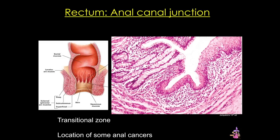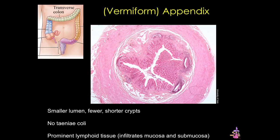Heading back up to the cecum, the appendix is a small blind-ending extension of the proximal cecum. Histologically, it looks very much like the colon, but it has a small irregular lumen and shorter, less dense glands. The main distinguishing feature of the appendix is the large number of lymphoid aggregates in the mucosa and the submucosa.